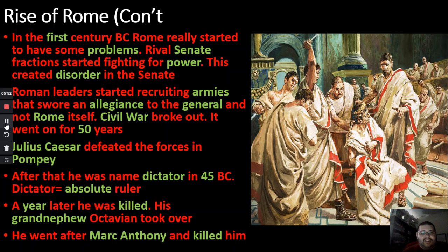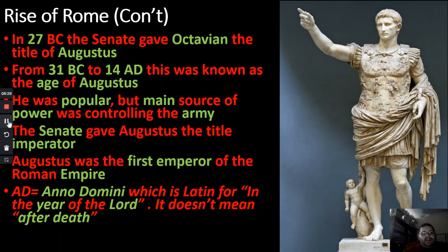After killing Julius Caesar, many senators thought things would get better, but they didn't realize the next person to step up was Caesar's grandnephew, Octavian. Octavian did not hold back — he went after the senators and everyone who killed or profited from his great uncle's death, including going after Mark Antony and Cleopatra and having them killed. In 27 BC, the senate gave Octavian the new title of Augustus.